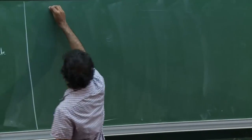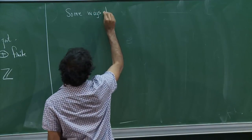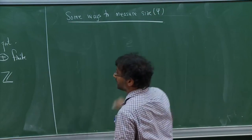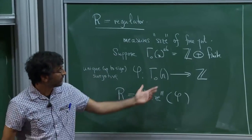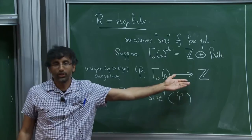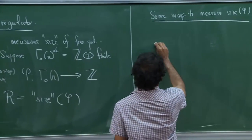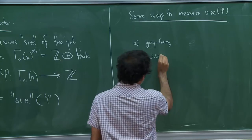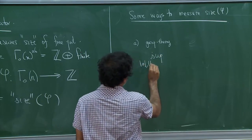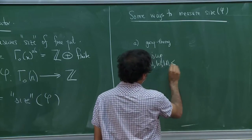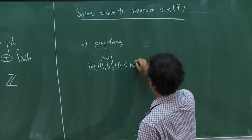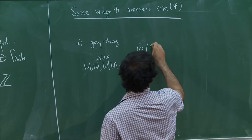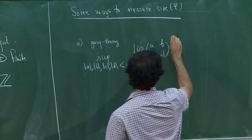The most naive way: this is a homomorphism from this group to Z, and you just look at a bunch of small elements and take the largest value it takes. A group-theoretic way — you pick some bound for how big your entries should be, maybe up to some power of n, and you just take the largest value to see how big it gets.